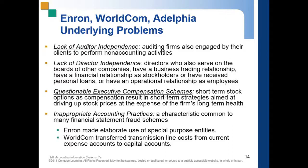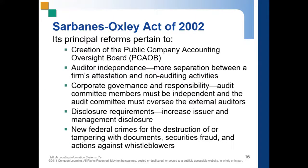Lastly, there are inappropriate accounting practices, which are common to many financial statement frauds. For example, Enron made elaborate use of special purpose entities, and WorldCom transferred transmission line costs from current expense accounts to capital accounts. These schemes manipulate recordings in the financial statements — for instance, not recognizing a liability as a liability, or not recognizing an expense as an expense, so that income appears larger than it actually is.